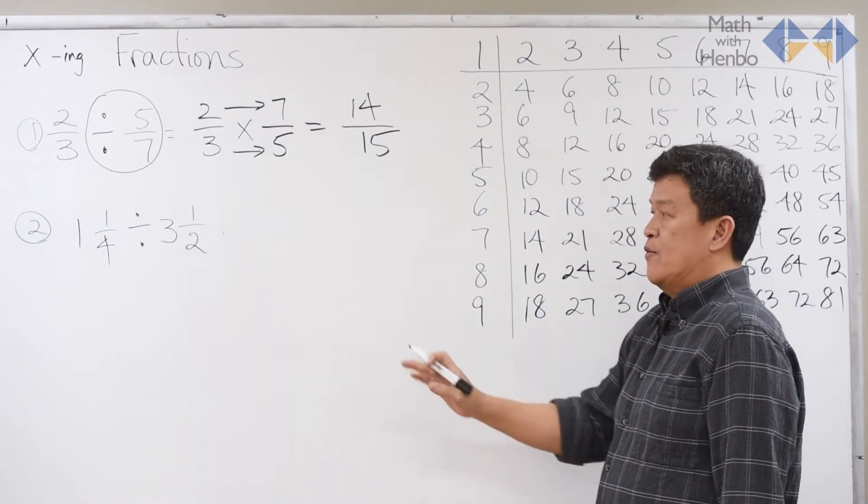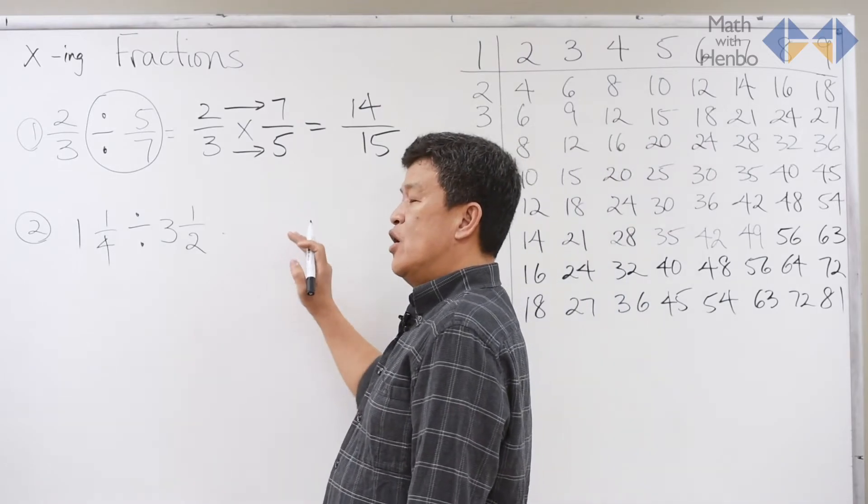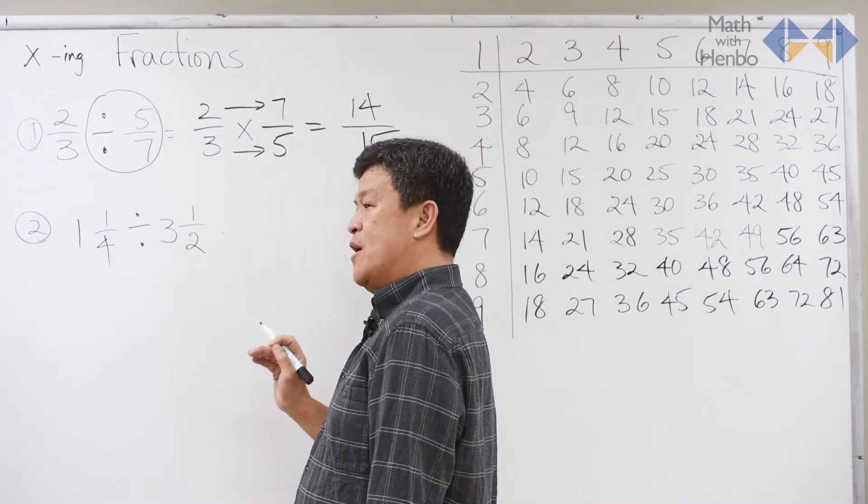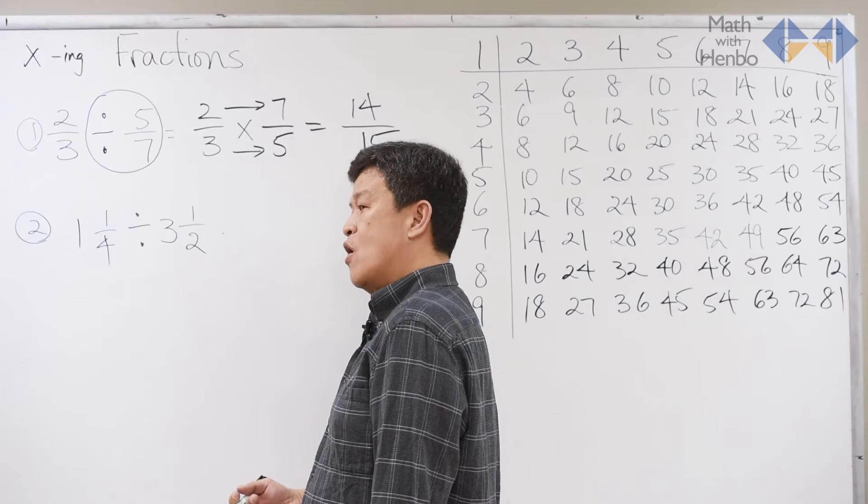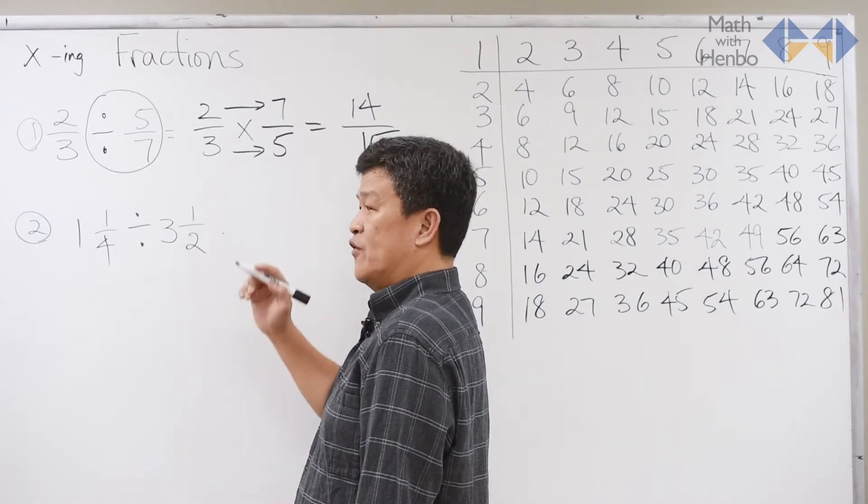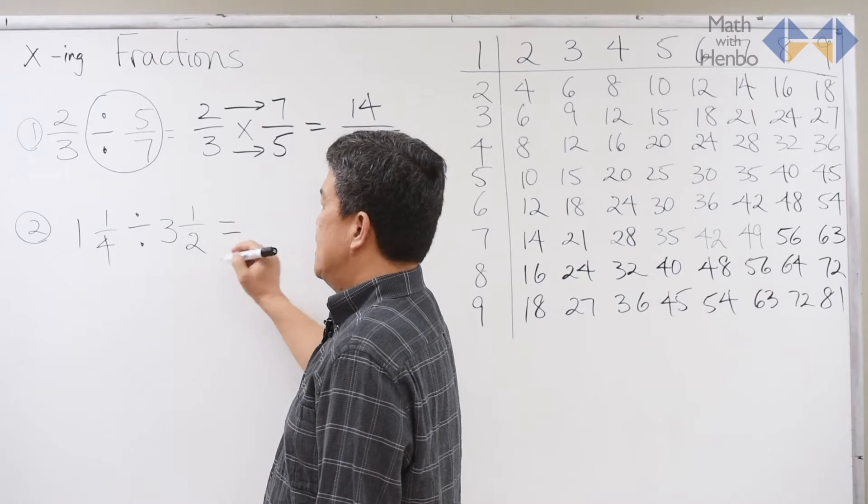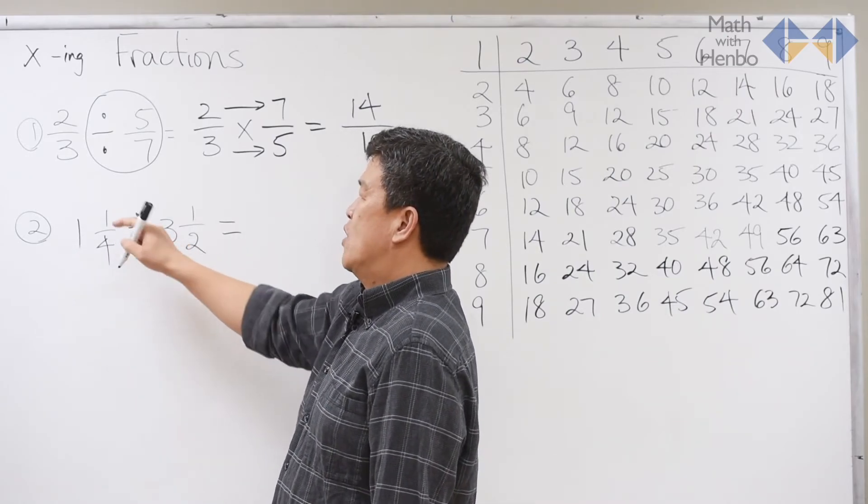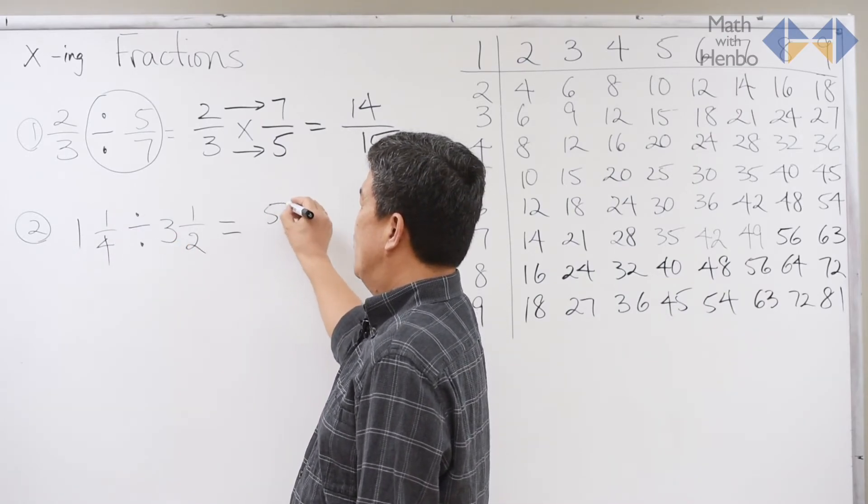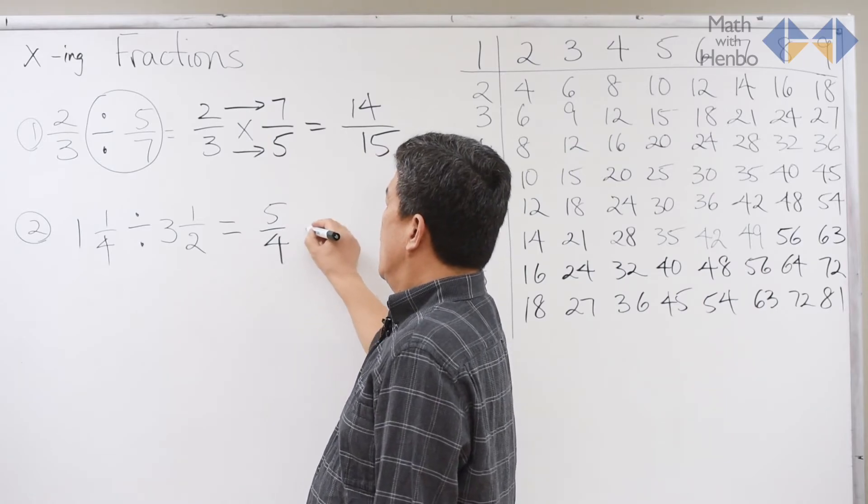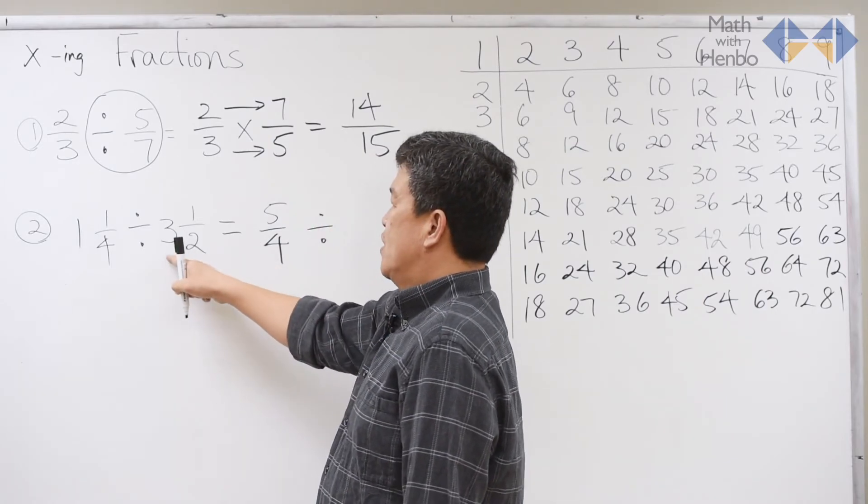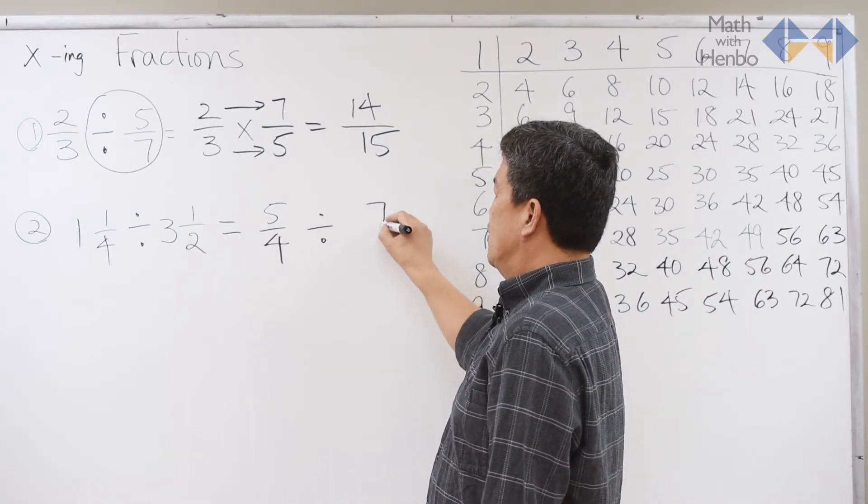For the second step, when you have mixed numbers, what you want to do is change them into improper fraction before you actually follow the first step. So, in this case, 1 times 4 plus 1, as we did for multiplication, was 5 over 4. Keep the division sign. 3 times 2 plus 1 was 7 over 2.